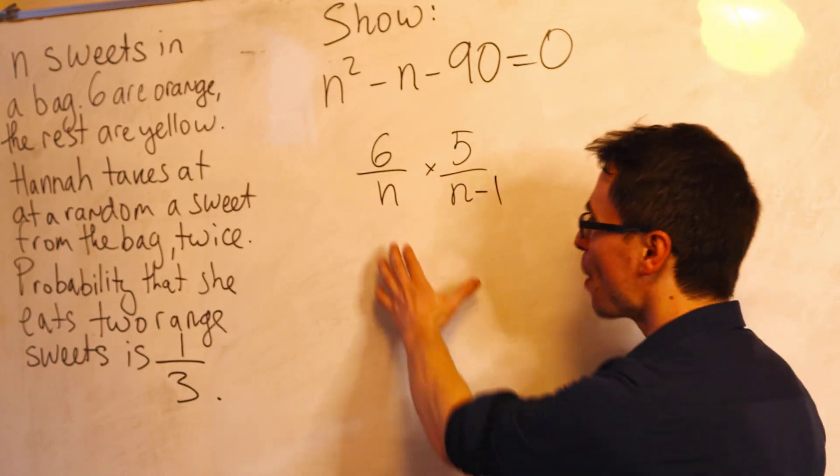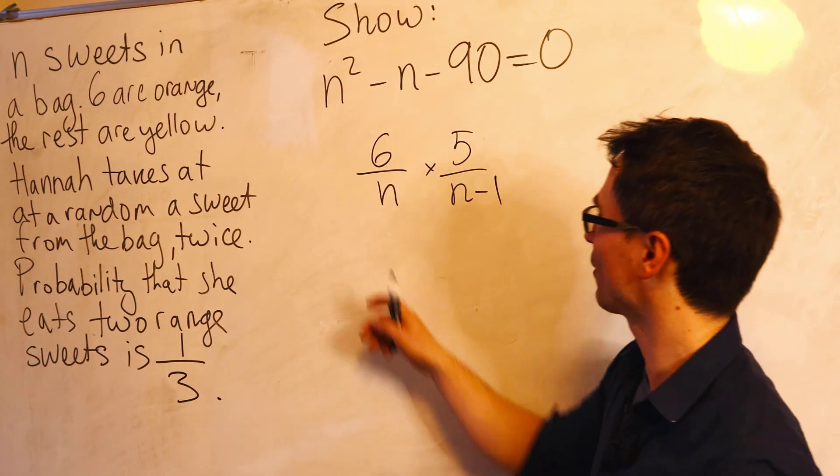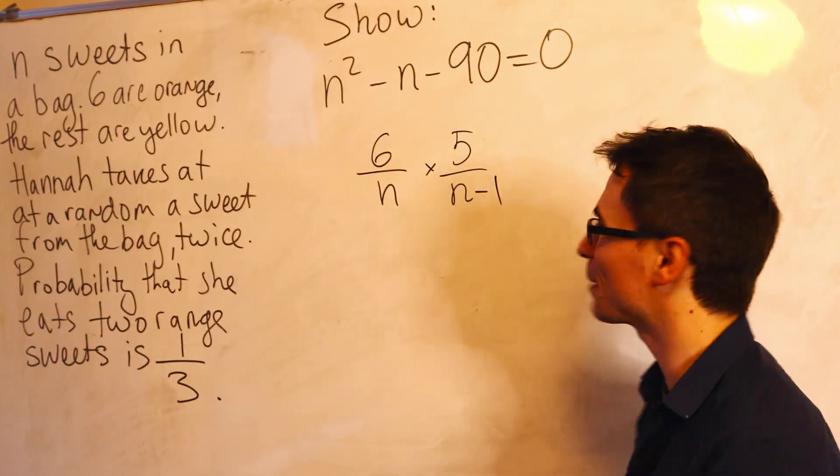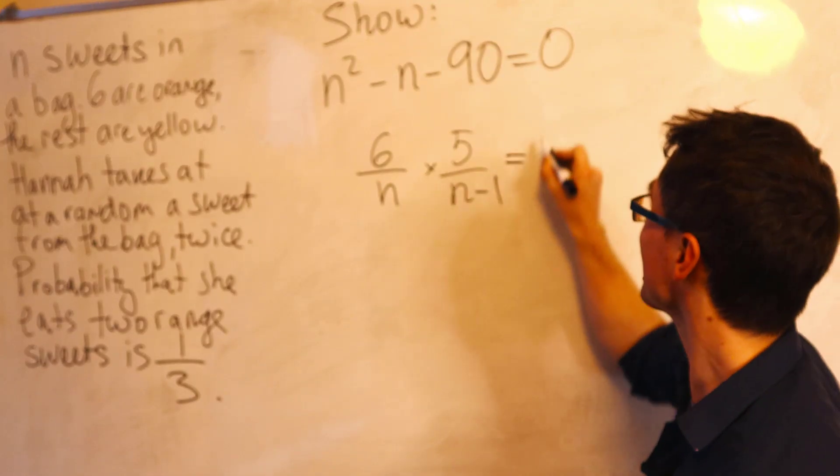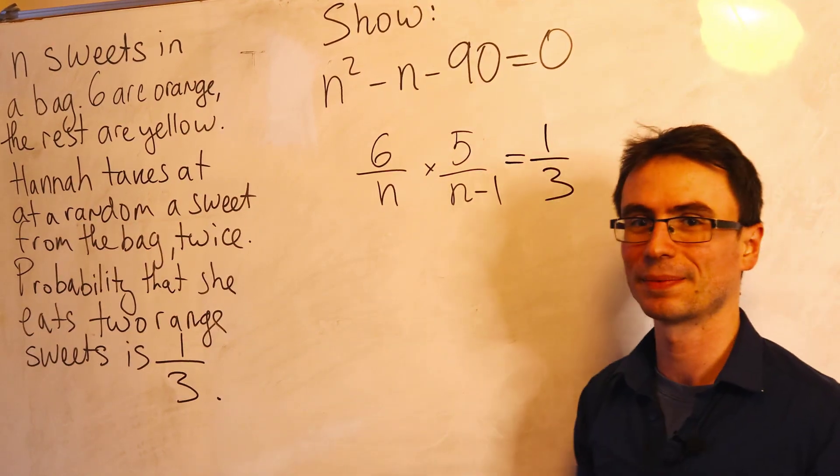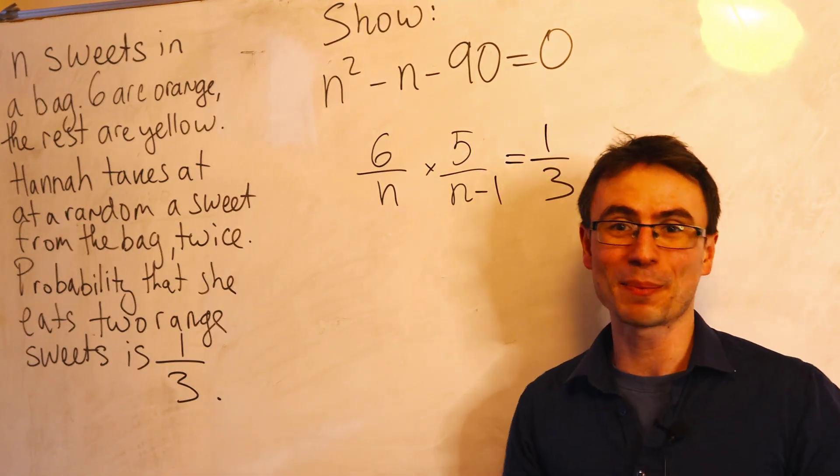And remember, the probability of both of those events occurring will be given by this probability multiplied by the second one. The question says that this probability is equal to a third. And now all we need to do is some algebra.